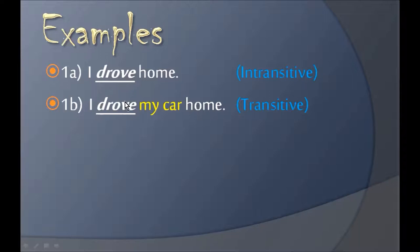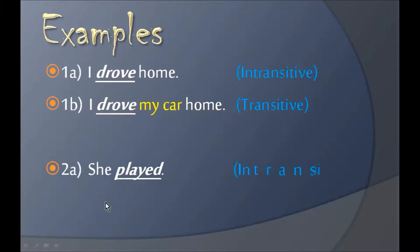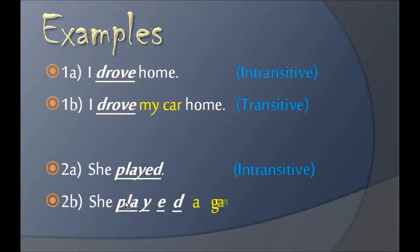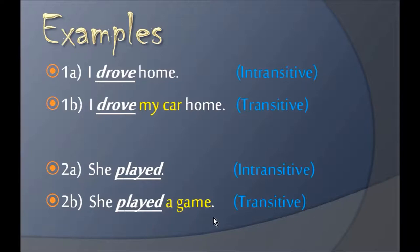A verb doesn't permanently become either transitive or intransitive — we use the verb either transitively or intransitively. So 'drive' can be used both ways, and we call this an ambitransitive verb. Another example: 'She played' — no object, intransitive — and 'She played a game' — with an object, transitive. Play can be used as both, so it's ambitransitive.